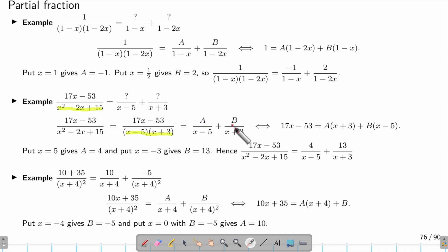Again, I'm multiplying the whole expression to both equations, so the denominator disappears. Now I will put x = 5, so this term disappears and gives me A = 4. And if I put x = -3, this gives me B = 13.